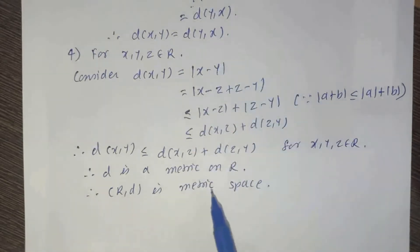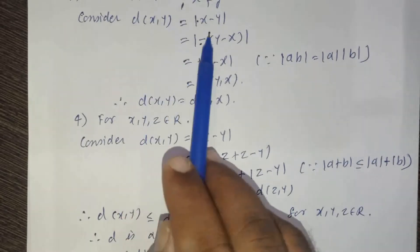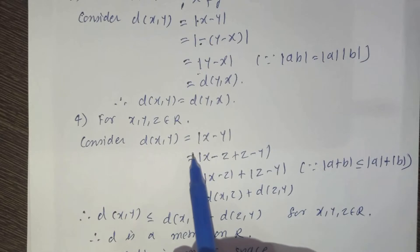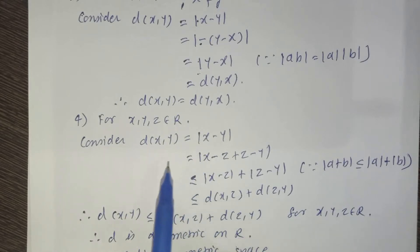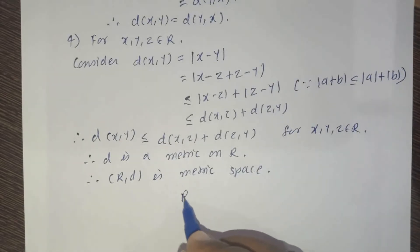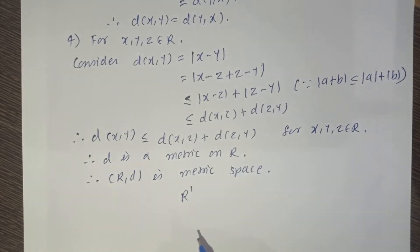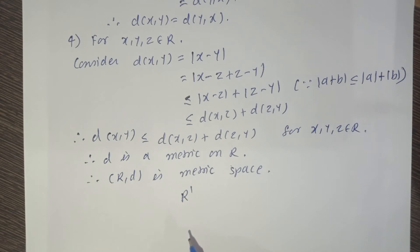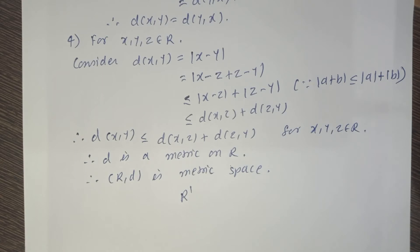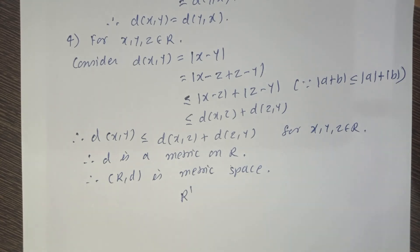This metric space, where D of XY equals absolute value of X minus Y, is called the absolute value metric. It is also known as the usual metric on R, and the metric space (R, D) is known as the usual metric space. This is the example of a metric space. In the next lecture, we will consider another example.